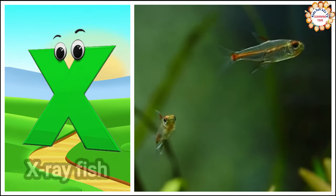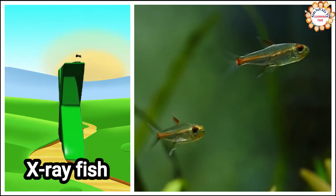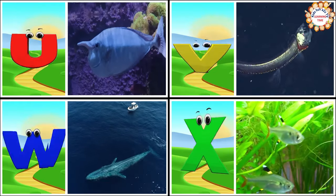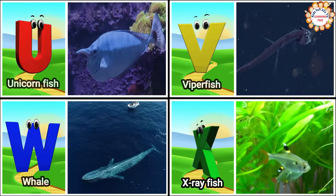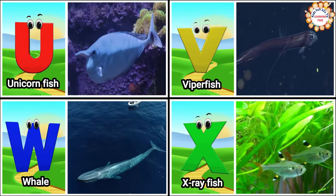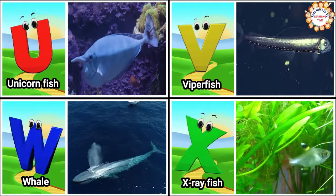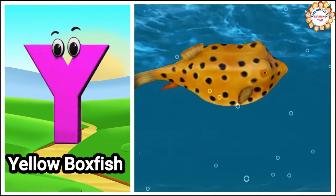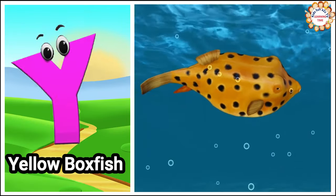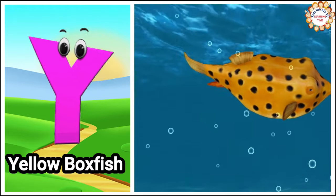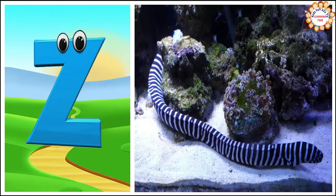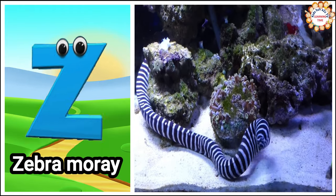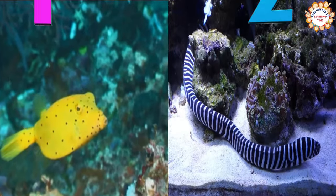X is for x-ray fish. X, x, x-ray fish. Y is for yellow boxfish. Y, y, yellow boxfish. Z is for zebra moray. Z, z, zebra moray.